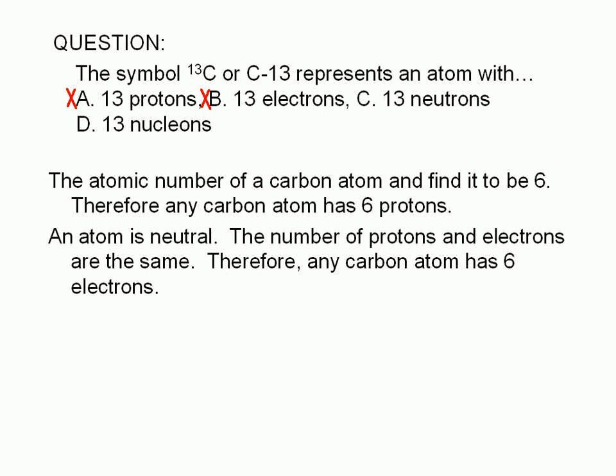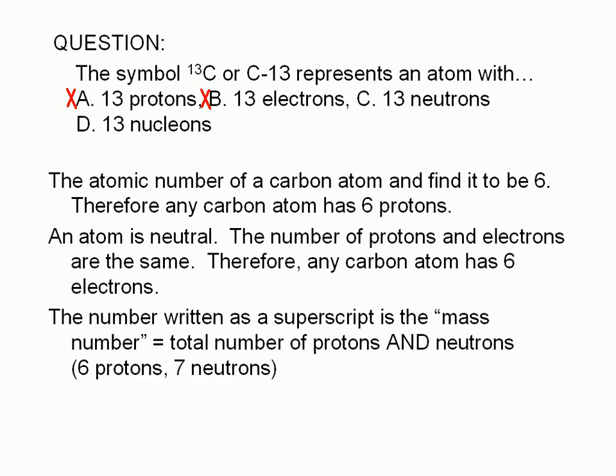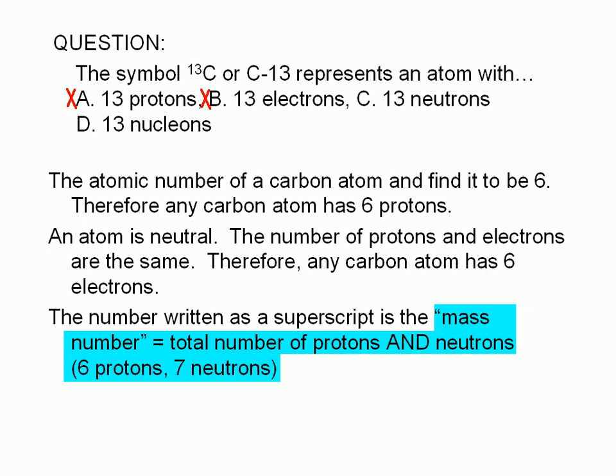So what exactly does the number 13 show here? It's called the mass number — the total number of protons and neutrons. This means the symbol represents an atom with 7 neutrons, since we have already established that this atom has 6 protons: 6 plus 7 equals 13. Therefore, choice C is wrong; this atom has 7 neutrons, not 13.